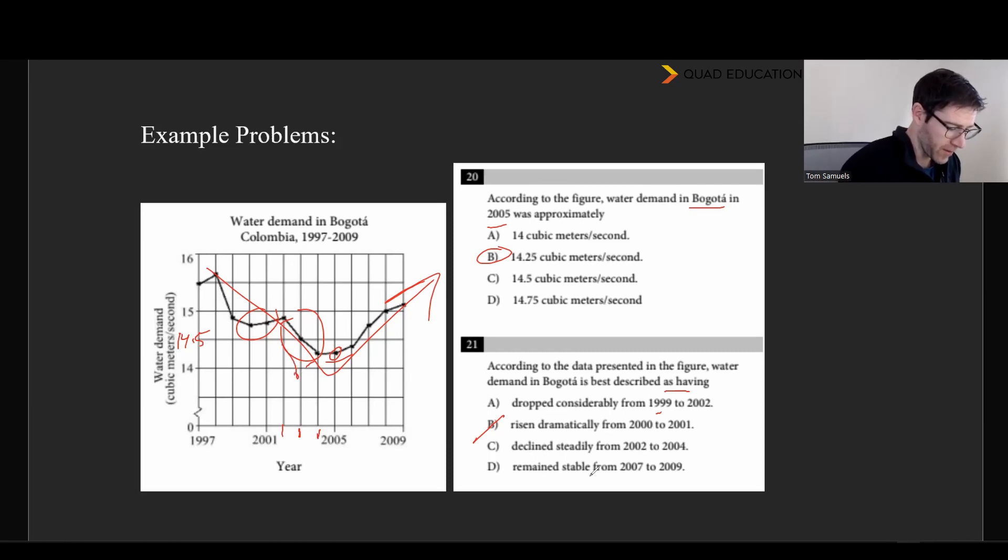And then remains stable from 07 to 09. And so what I would say as far as decisions go here is these are all almost right. But I would say the drop considerably from 99 to 2002 might be our best look because here in 99, we're at more than 15 and a half. And here in 2002, we're down quite a good chunk. So I would say this would be our dropped considerably because it goes quite a bit down there.